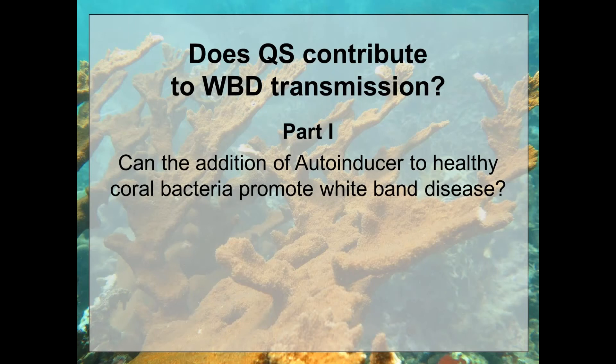This leads me to my research questions. Quorum sensing is a big player in virulence in a lot of bacterial species, so I thought maybe this could be involved in coral disease. Can the addition of autoinducers — those signaling molecules — to healthy bacteria promote white band disease? Can we actually create disease by giving these bacteria the molecules they need to turn virulent?